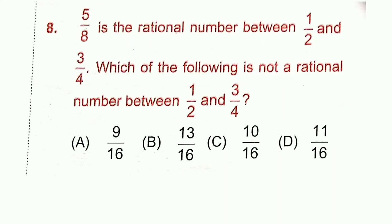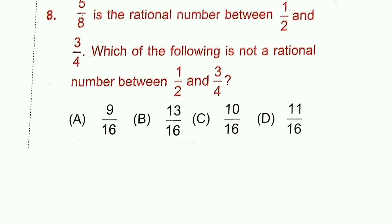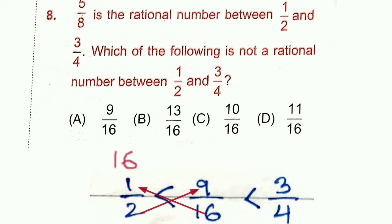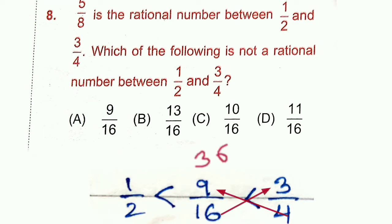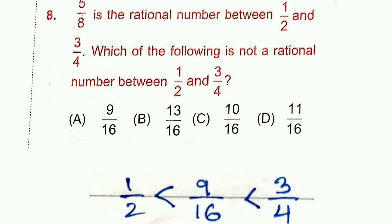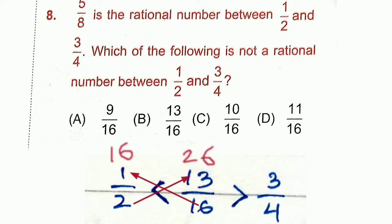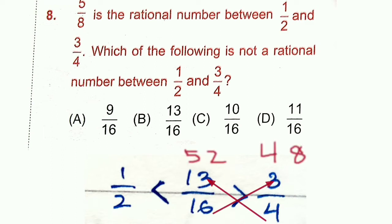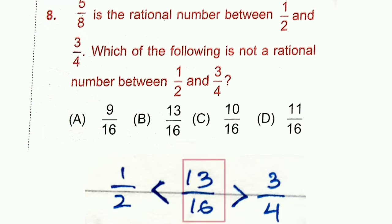Question 8: 5/8 is a rational number between 1/2 and 3/4. Which of the following is NOT a rational number between 1/2 and 3/4? Option A: 9/16 — cross multiplication shows 9/16 > 1/2 and 9/16 < 3/4, so it lies between them. Option B: 13/16 — 13/16 > 1/2, but 13 × 4 = 52 > 16 × 3 = 48, so 13/16 > 3/4. Thus 13/16 does not lie between 1/2 and 3/4. Option B is correct.